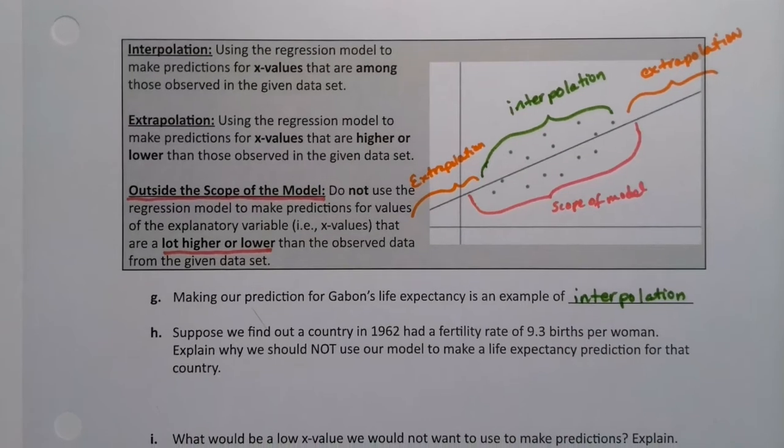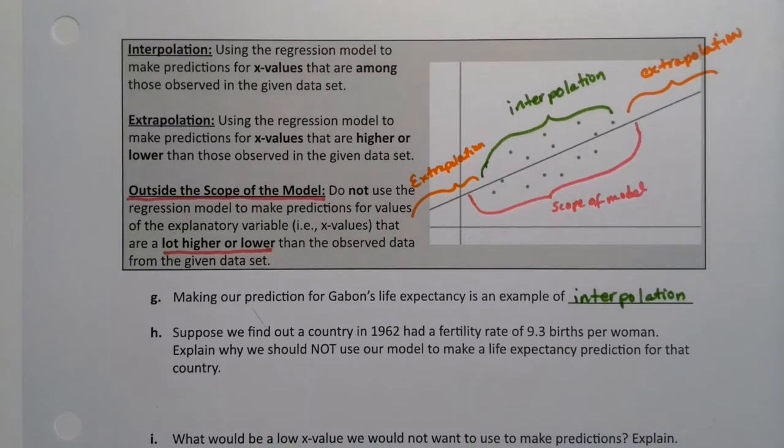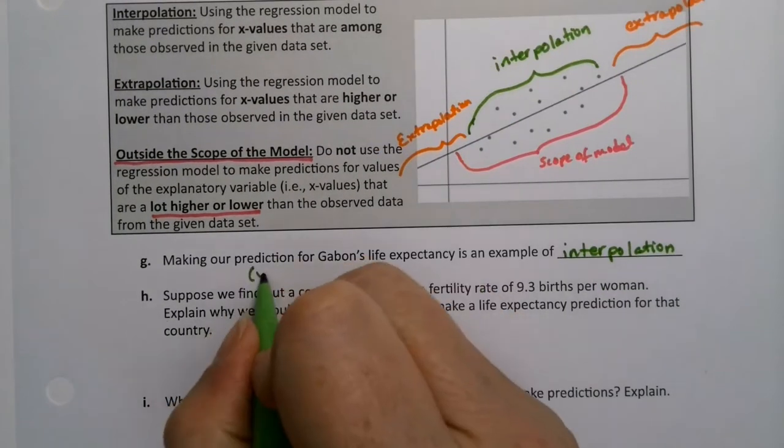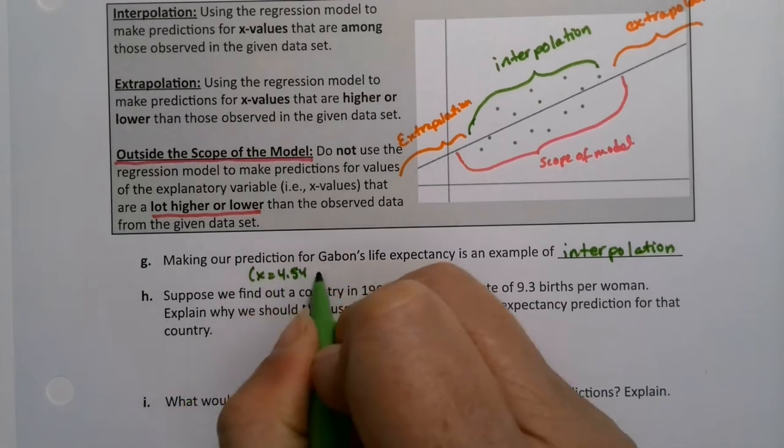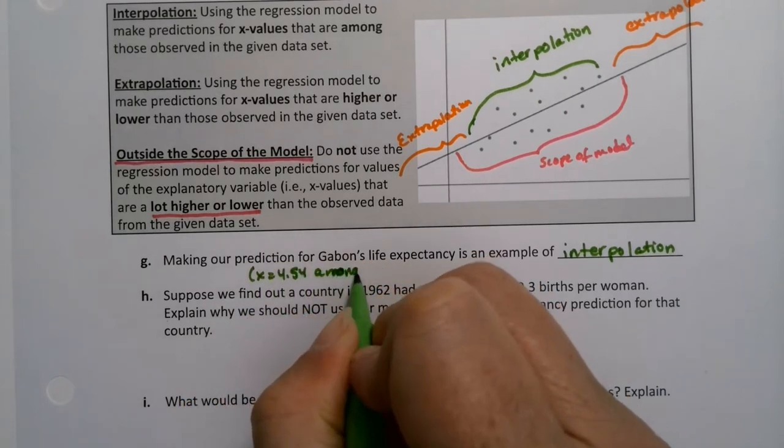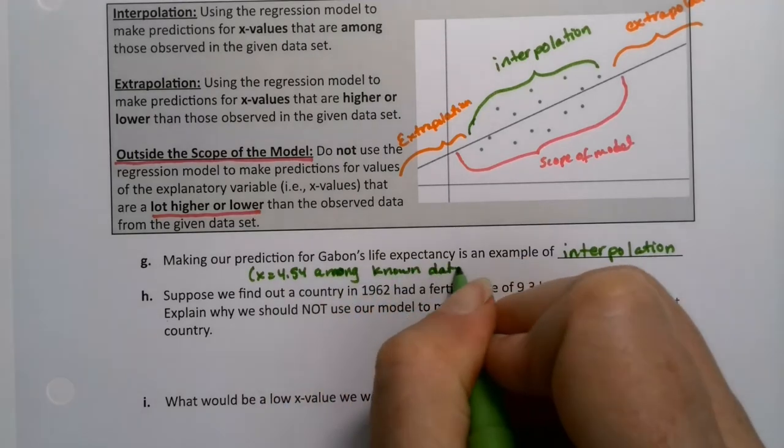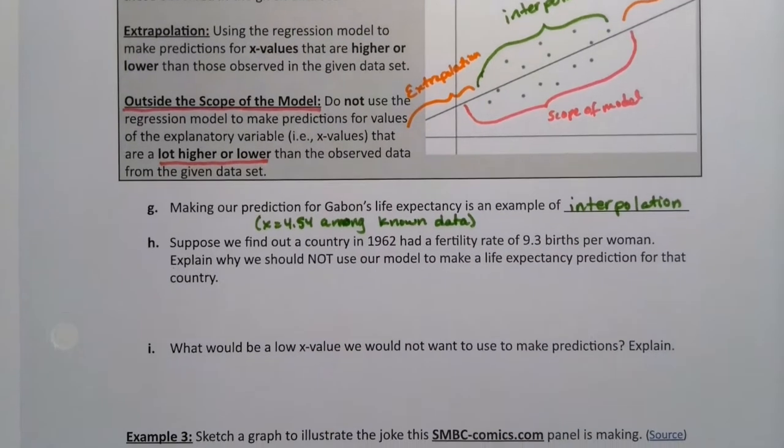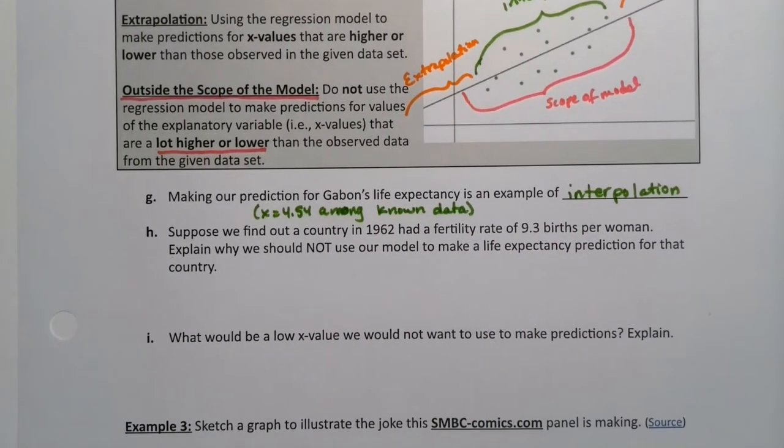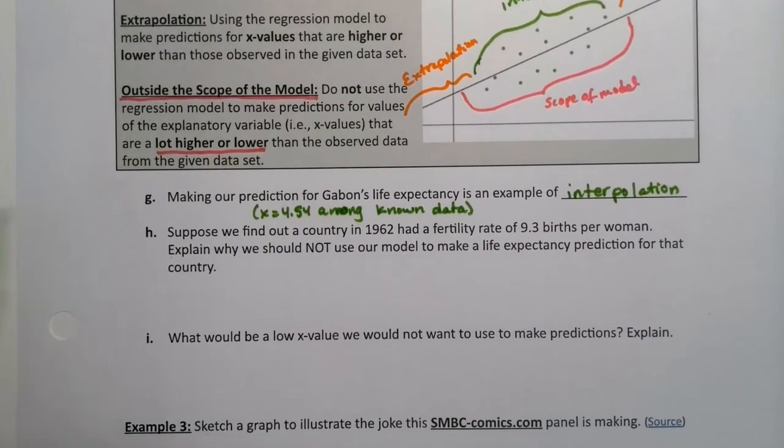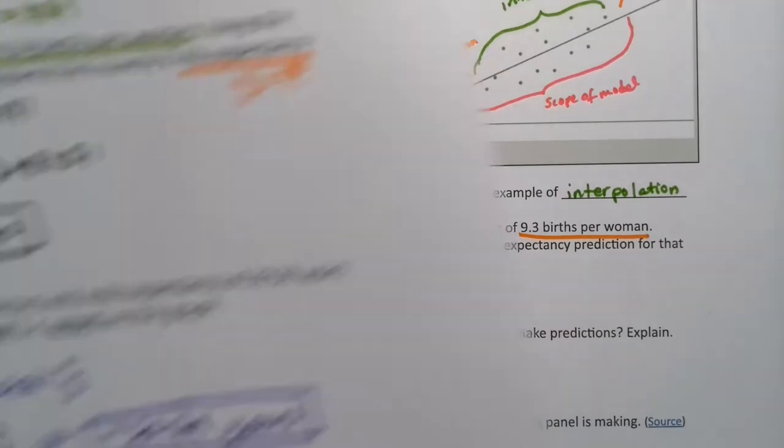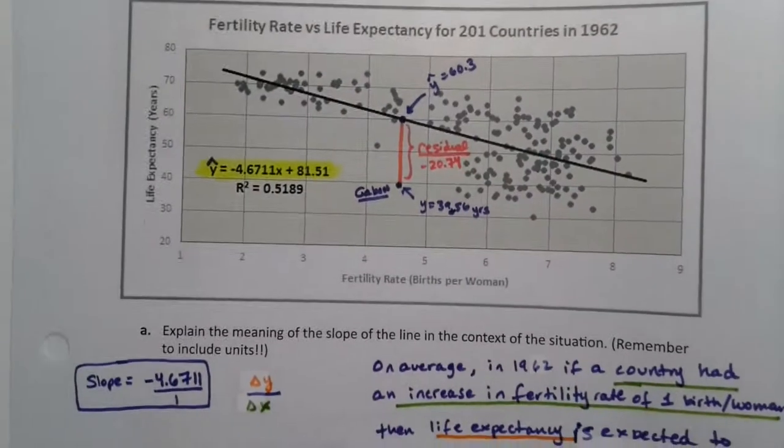And it's because the x equals 4.54 is right amongst our data points, among the known data. Now, what if we found out there was a new country we didn't know about before, that had a fertility rate of 9.3 births per woman? Now, why would we not want to use our model to make a prediction for that country?